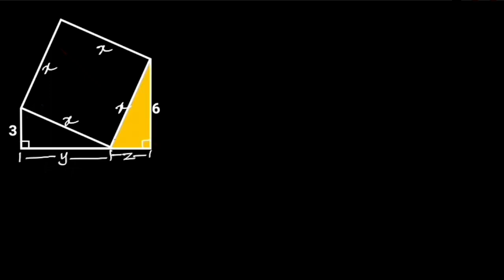Next, let's focus on the yellow triangle. This triangle is a right angle triangle. So, if we call this angle alpha, then this angle will be 90 degrees minus alpha. Reason: sum of angles in a triangle.